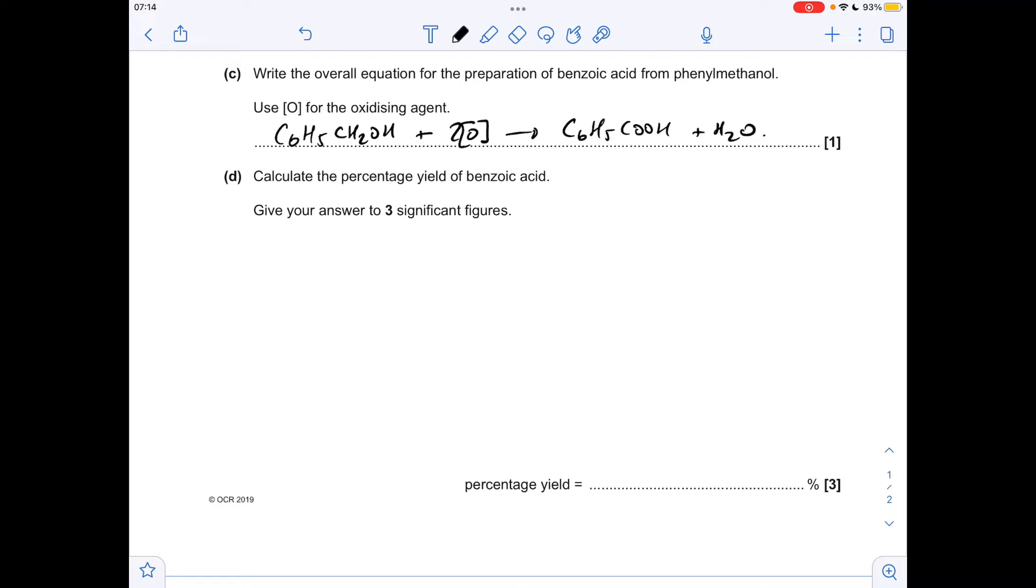Moving on to part D, the percentage yield calculation. The catch here is that they've given us the volume of phenyl methanol and its density, so we can turn that into a mass by multiplying them together. We've got 4.16 grams of the alcohol, so when you divide that by its Mr, we get that many moles of the alcohol.